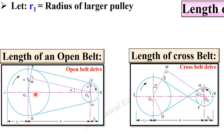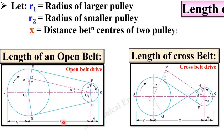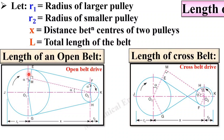Let us say R1 will be the radius of the larger pulley and R2 will be the radius of the smaller pulley. In both cases, x will be the distance between the centers of these two pulleys, and L is the total length of belt in case of open belt drive and in case of cross belt drive.